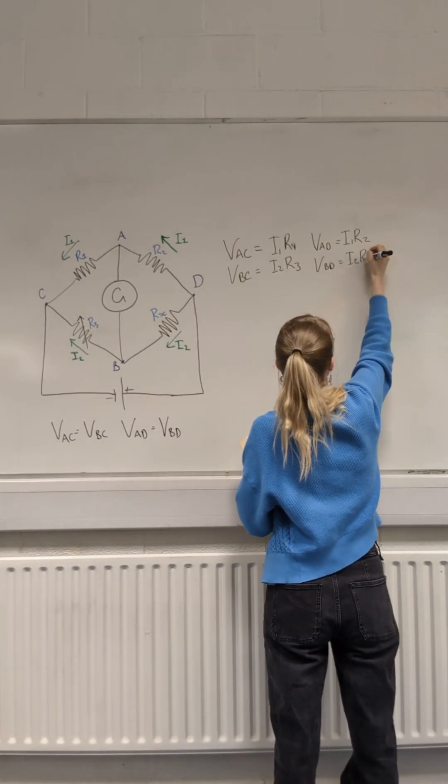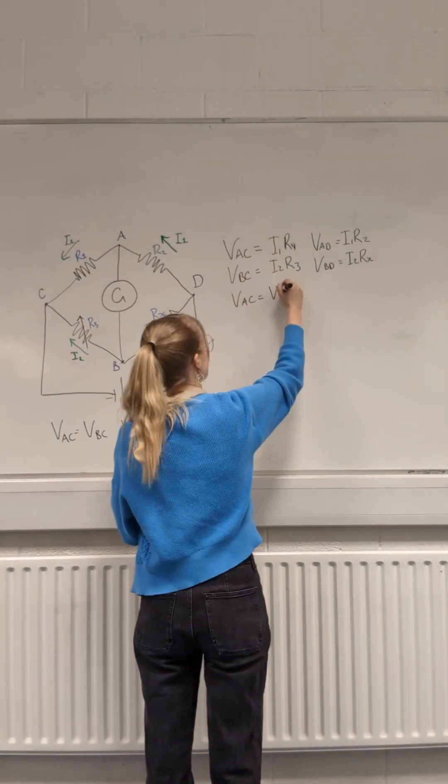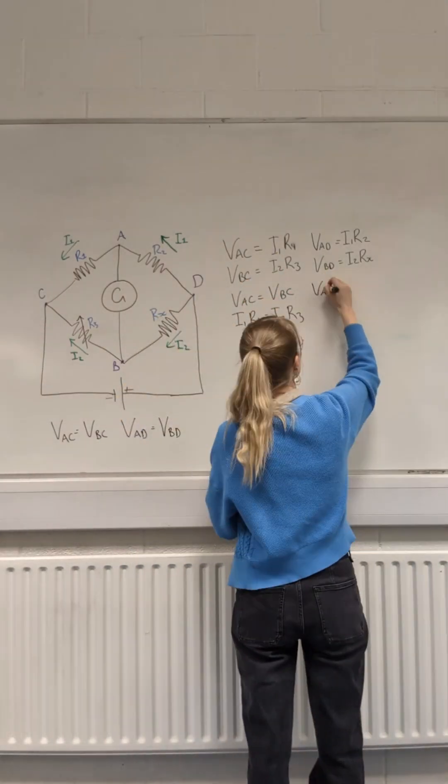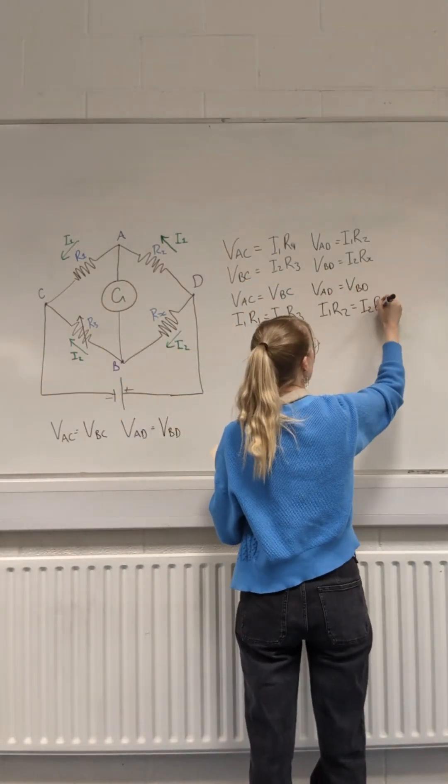Because the Wheatstone Bridge is balanced, the potential at AC and BC must be equal, and the potential at AD and BD must be equal. Therefore, we can equate these equations.